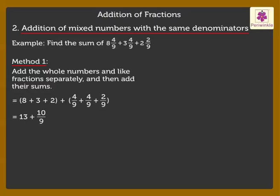Further, simplifying the improper fraction 10 upon 9, we get 13 plus 1 plus 1 upon 9, which is equal to 14 plus 1 upon 9. Thus, we get the answer as 14 and 1 upon 9.